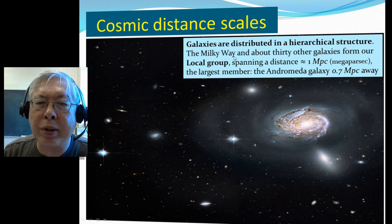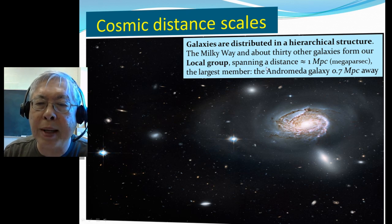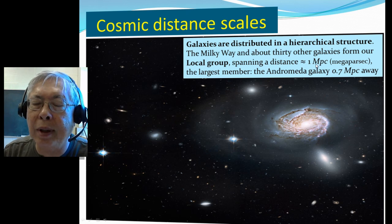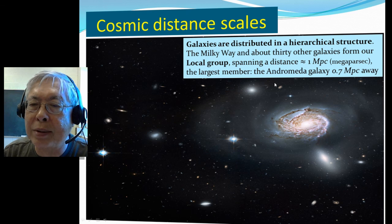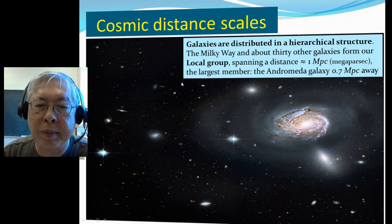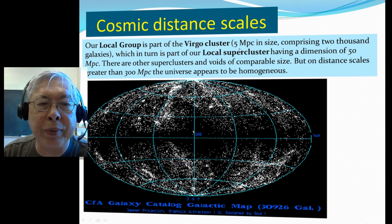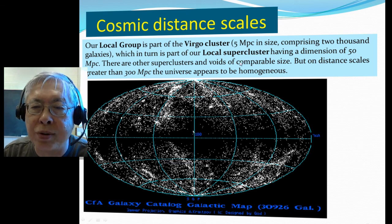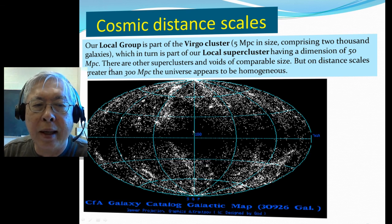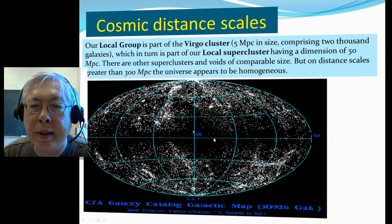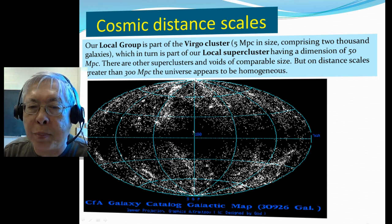Galaxies are distributed in a hierarchical structure. The Milky Way and about 30 other galaxies form what we call our local group, spanning a disk of about 1 megaparsec, which is about a million parsecs. The largest member, the Andromeda galaxy, is about 0.7 megaparsec away from us. And our local group is part of the Virgo cluster, which is about a size of 5 megaparsec, comprised of about 2000 galaxies, which in turn is part of our local supercluster having a dimension of 50 megaparsec. There are other superclusters and voids of comparable size. But on distance scales greater than 300 megaparsec, the universe appears to our observation to be homogeneous.